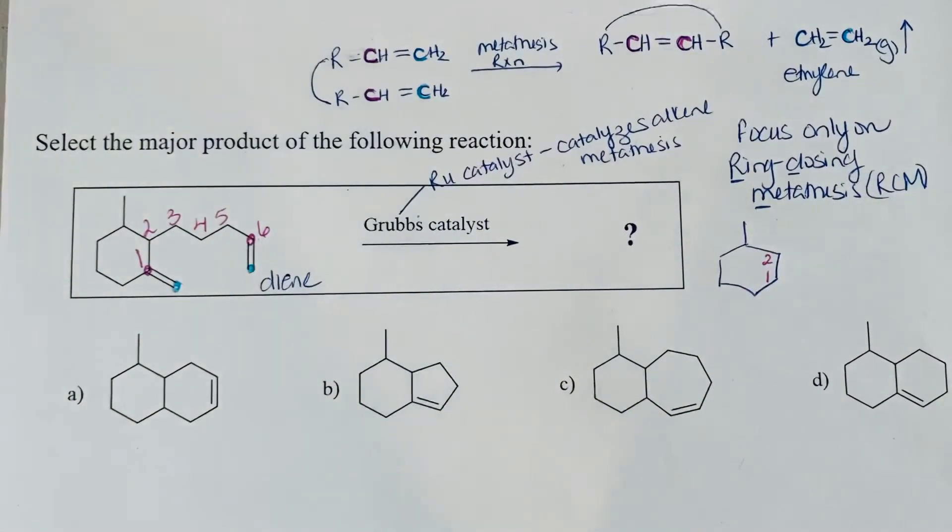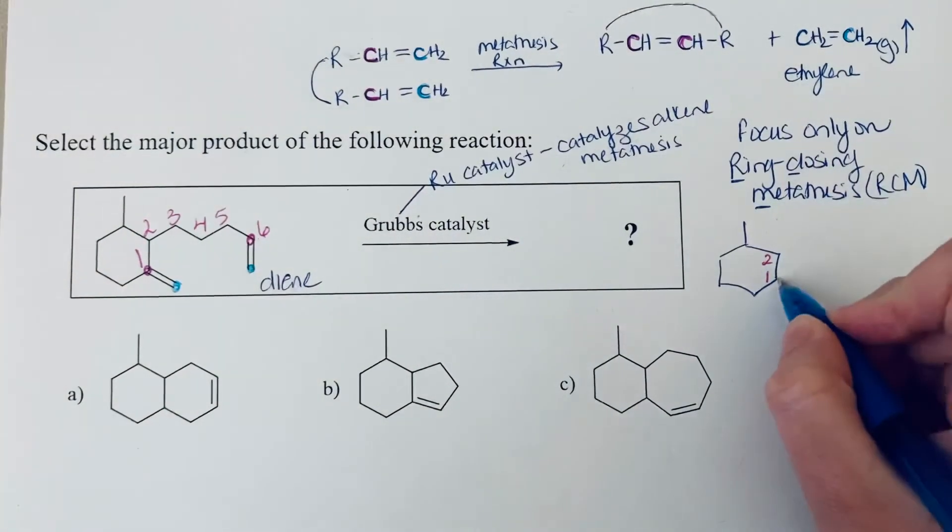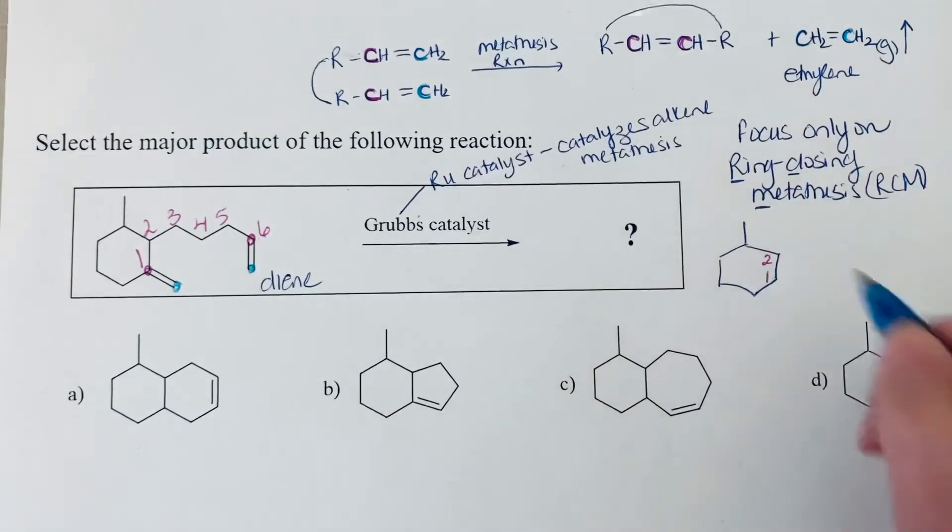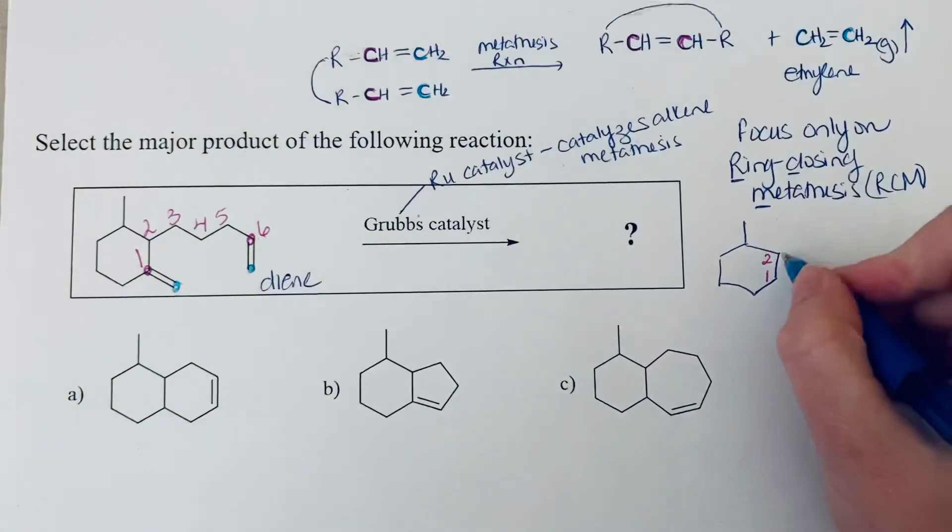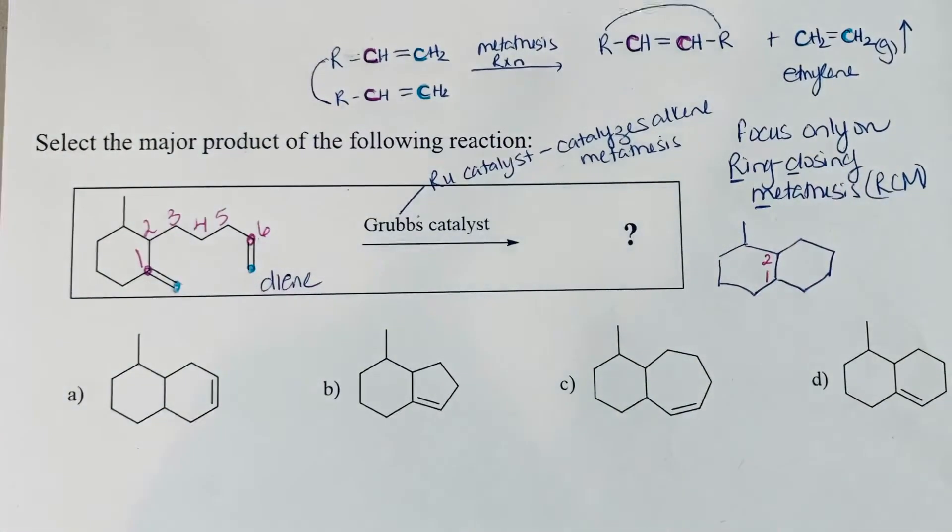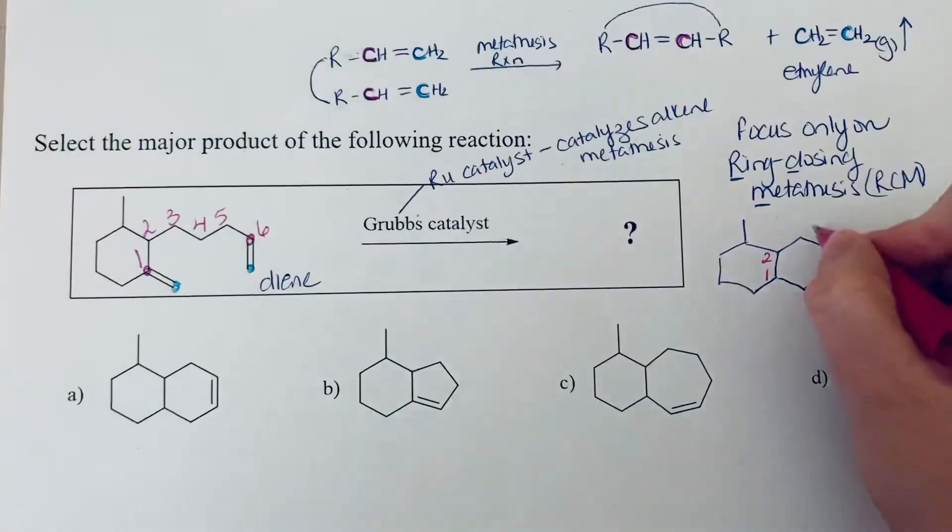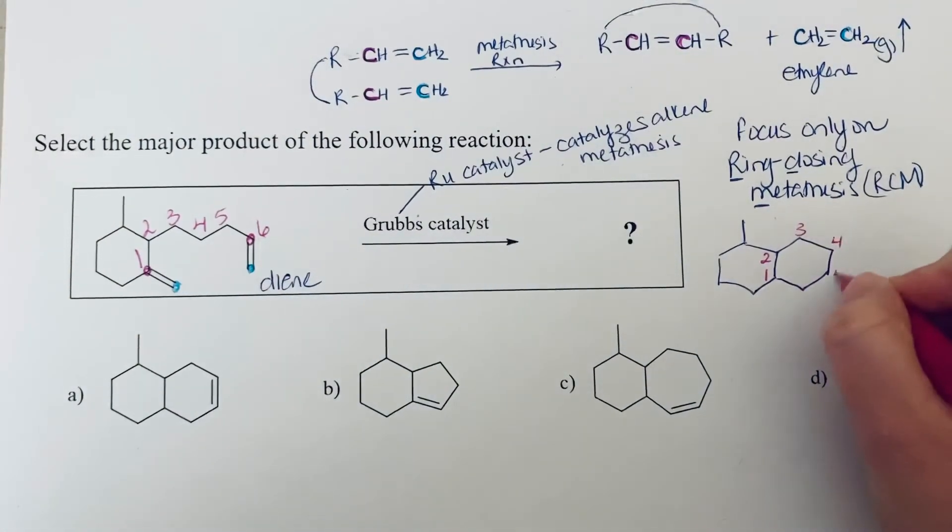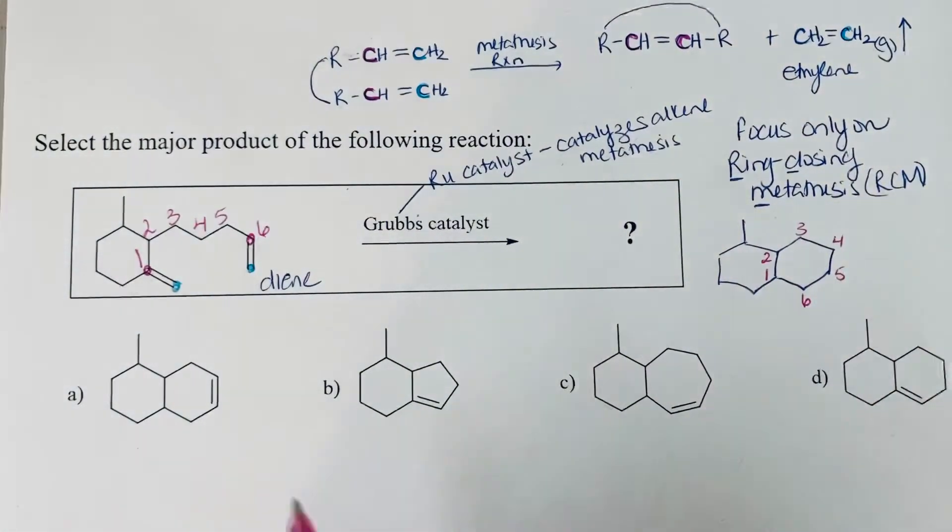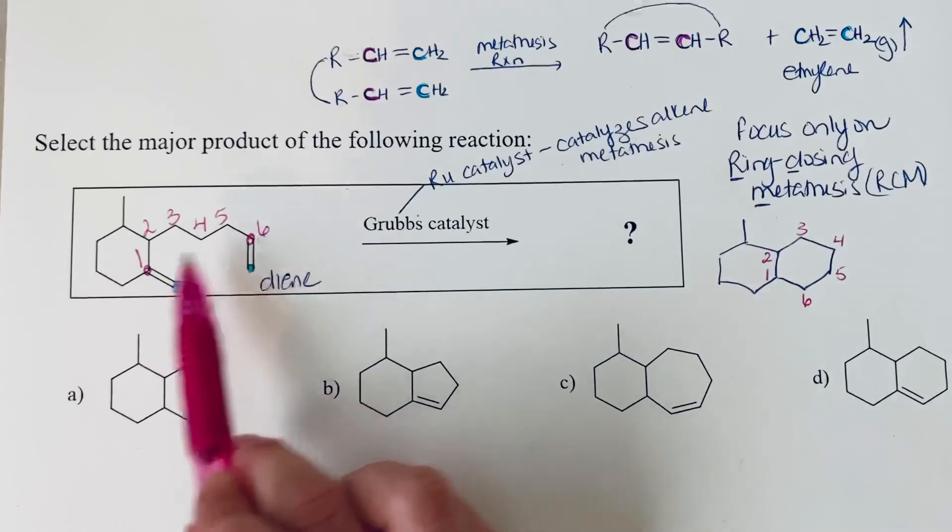And then we want to draw the rest of that six membered ring. So we're making this bond between carbons one and two as one side of our hexagon. So we're going to draw the rest of the hexagon there. And so I'm going to number these carbons three, four, five, six. And so the new bond is between carbons one and six.